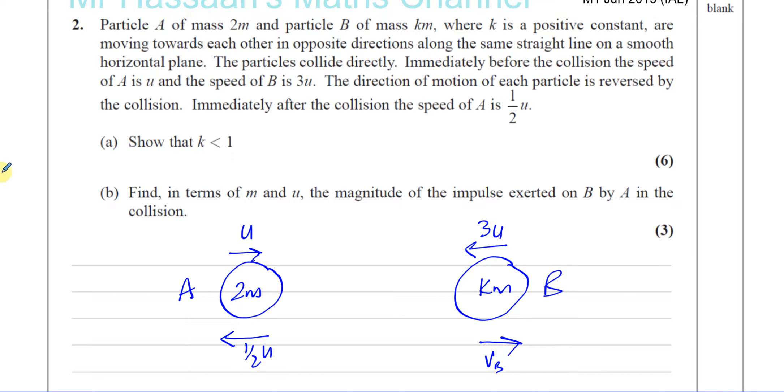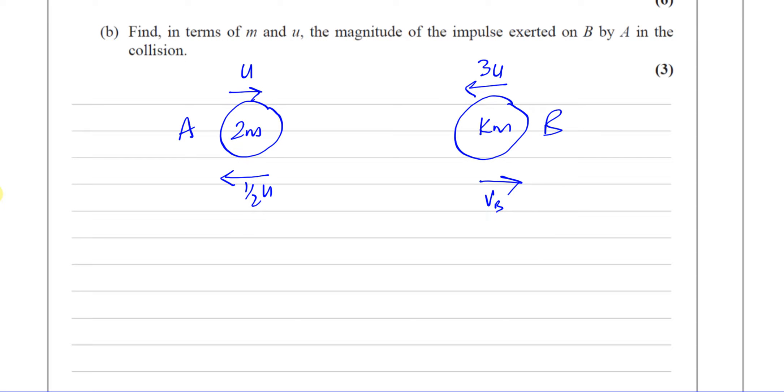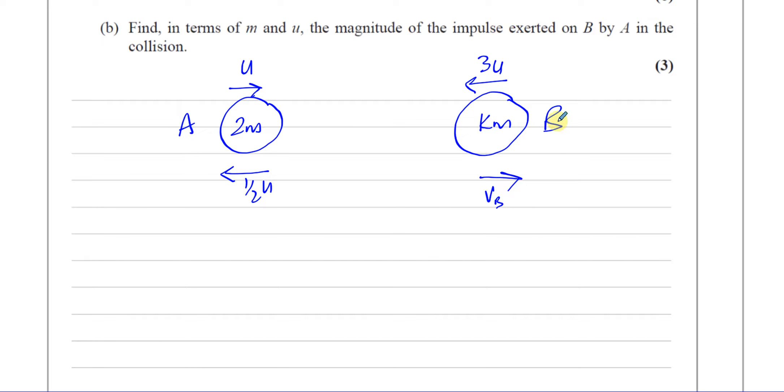Show that K is less than 1. So they didn't ask us to find VB, but let's see. Let's use the fact that the momentum before is equal to the momentum after the collision.